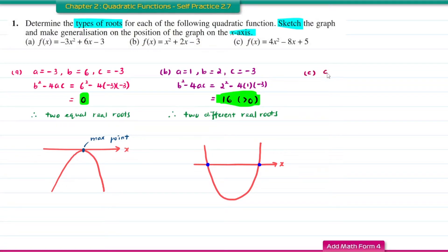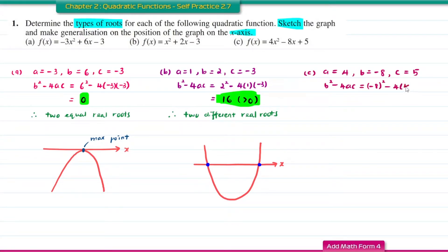Question C. The value of A is 4, B is negative 8, and C is positive 5. So the discriminant will be negative 8 squared minus 4 times 4 times 5. Solving this, you get the answer of negative 16, which is less than 0. So when the discriminant is less than 0, this function will have no real roots.